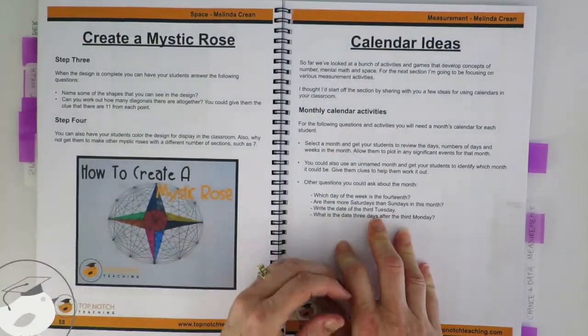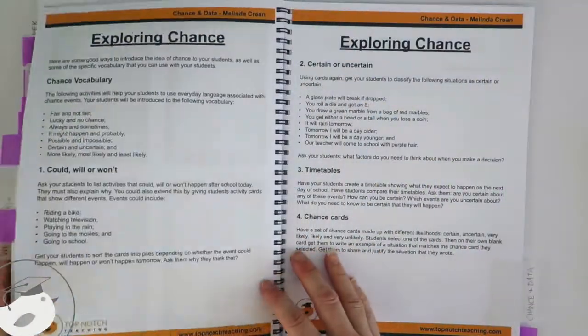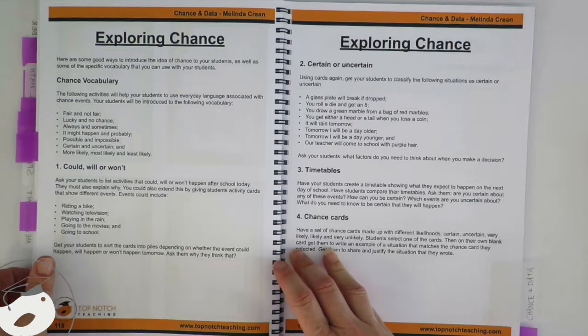We've also got measurement, and the final section in the book is chance and data as well.